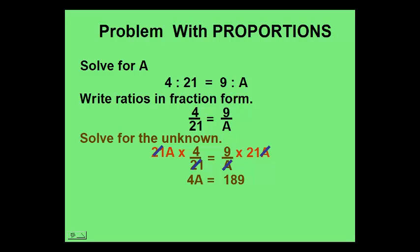Finally, we divide both sides by 4 and we'll have our answer for A. A is 189 fourths or 47.25 miles.